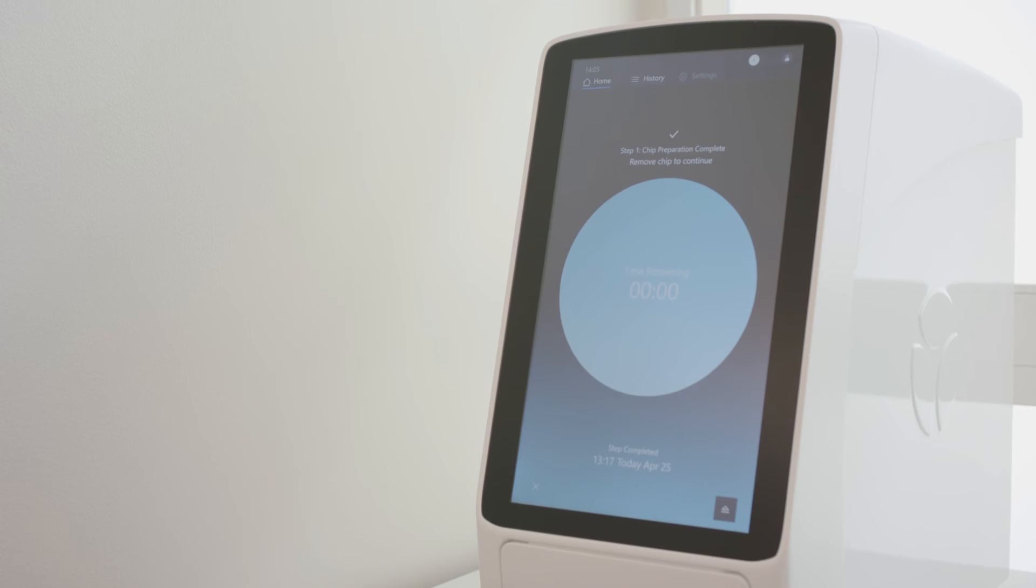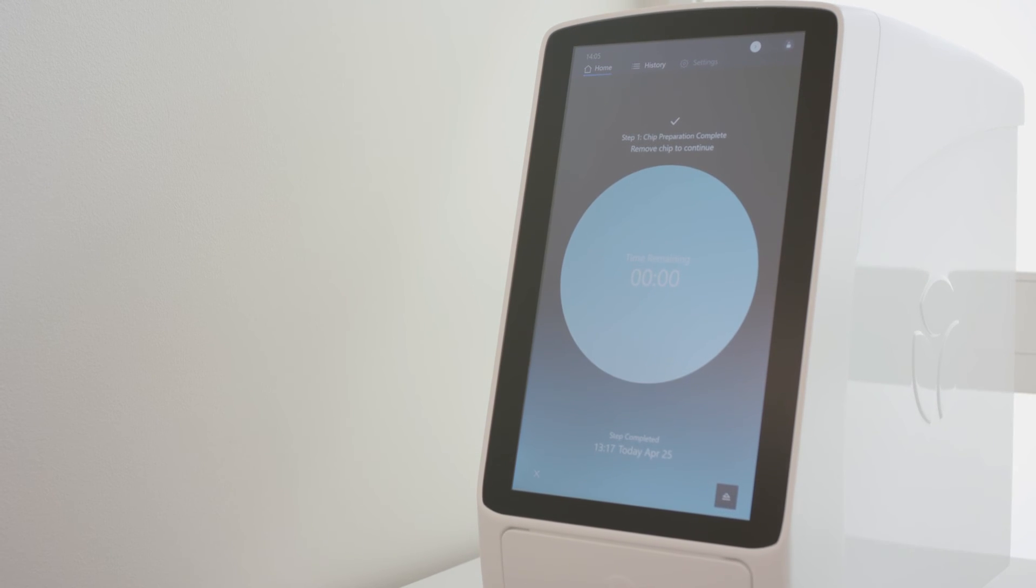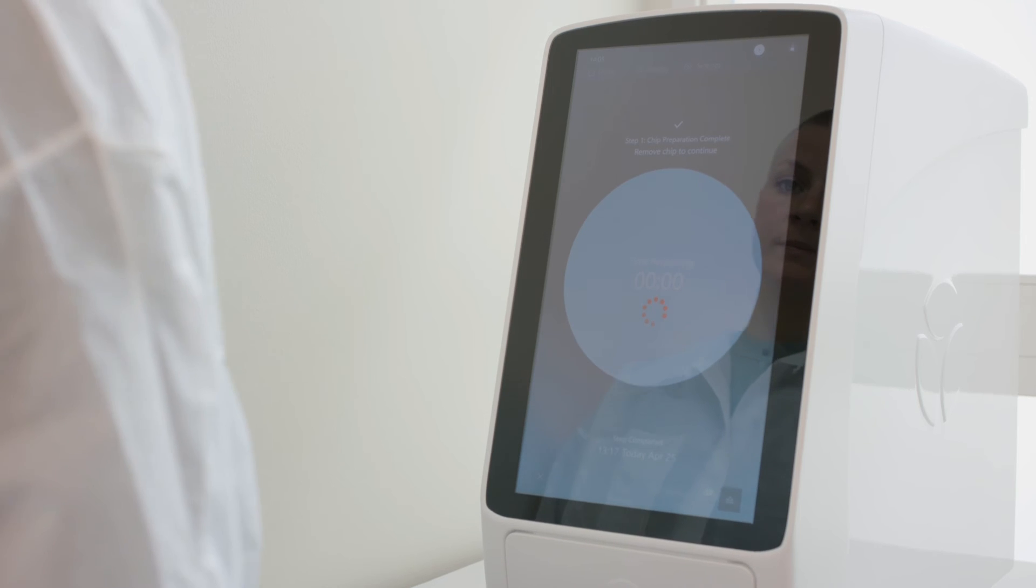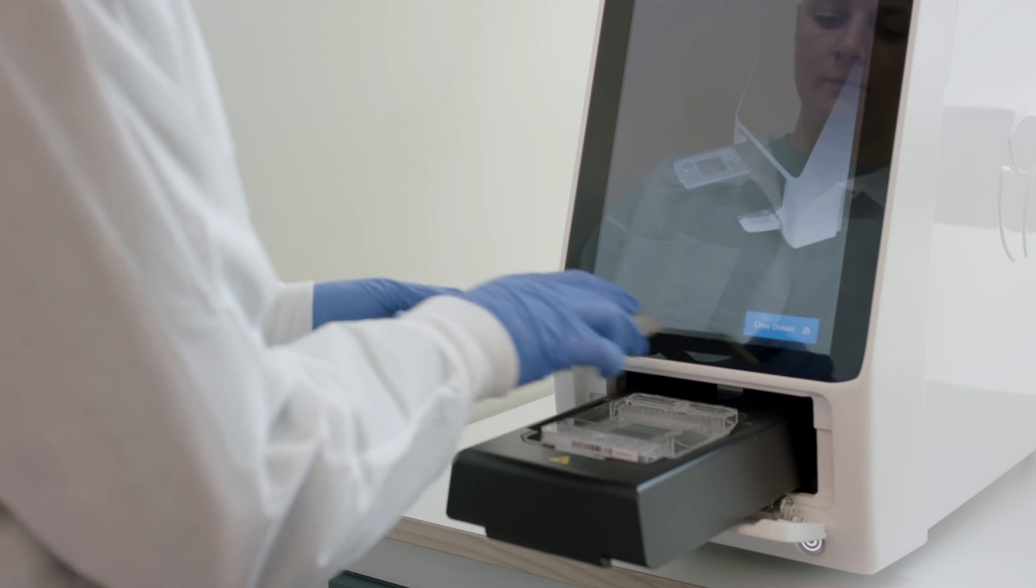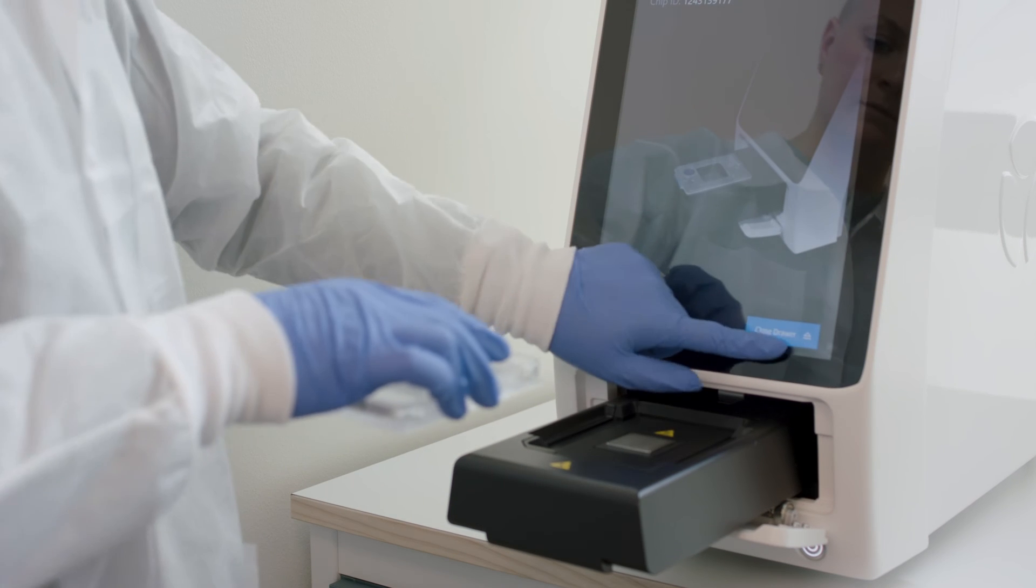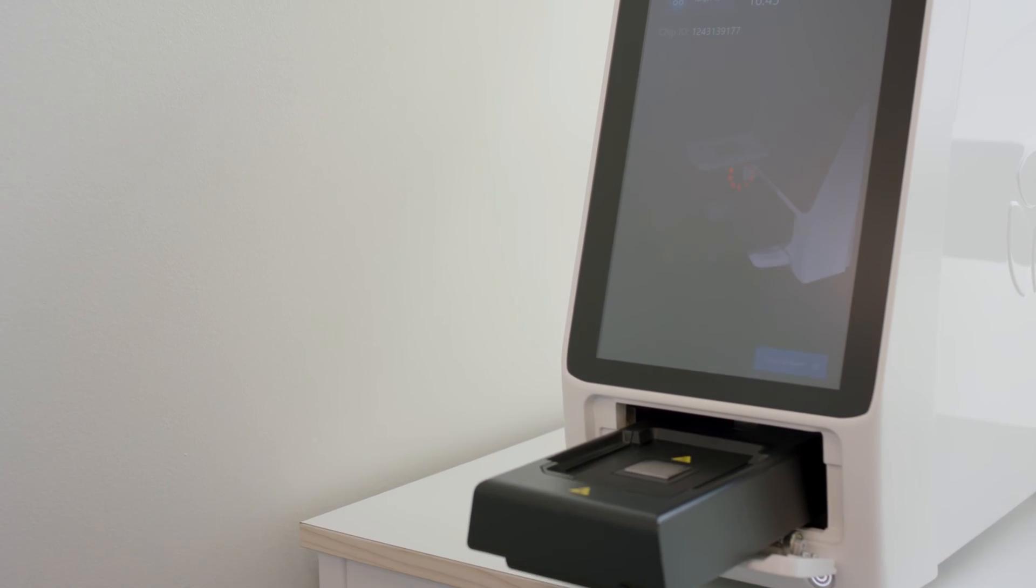The chip preparation is now complete, and the chip preparation complete screen is displayed. Tap the eject symbol to open the shuttle drawer and remove the interface plate and the IFC from the instrument. Tap close drawer on the screen. The shuttle drawer closes.